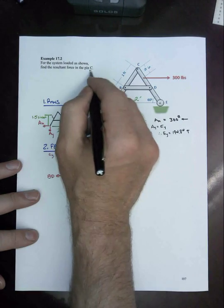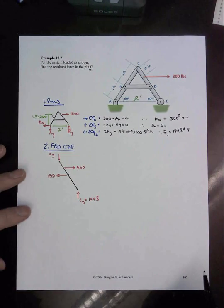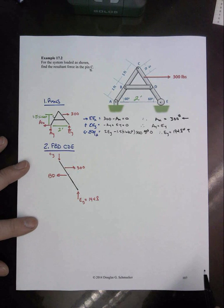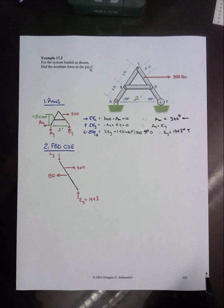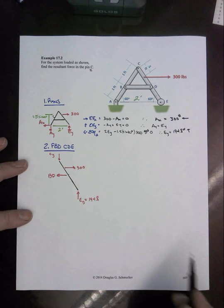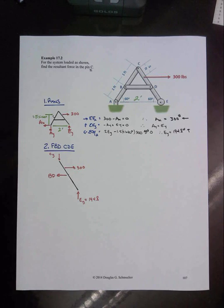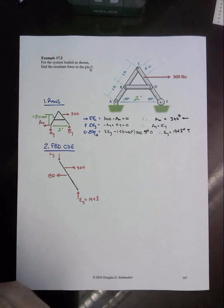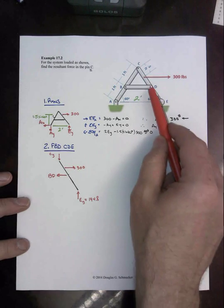So now to find what we were after here was of course finding the force at the pin at C. That means, a reminder, a resultant force, not a CX and CY but both. So when we draw the free body diagram, we could go to the left or to the right. I'm going to choose the member on the right.